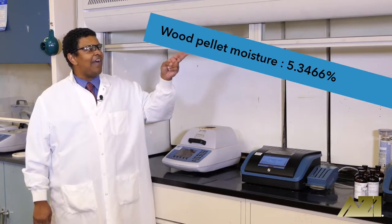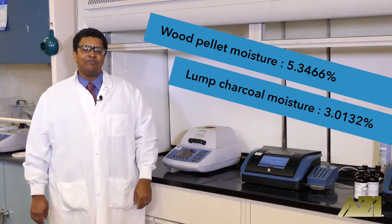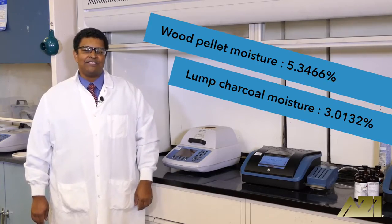With our test completed, you can see that the wood pellets have approximately 75% more moisture than the lump charcoal. This could be due to different drying specifications.